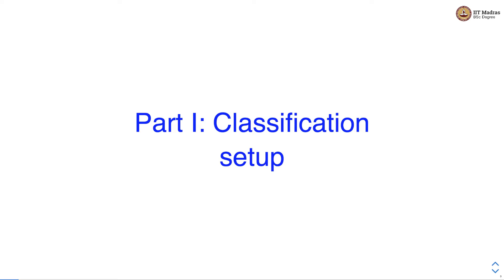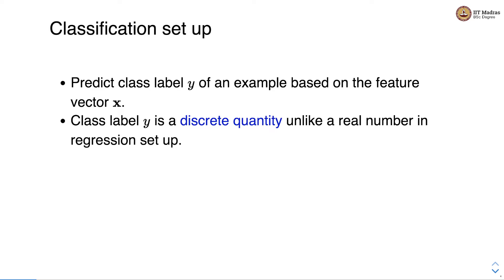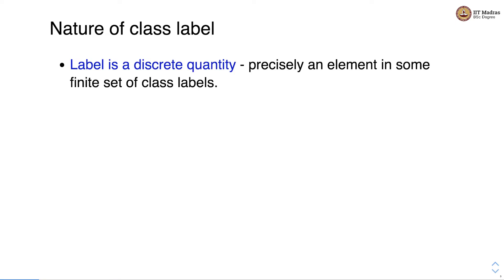Before getting into any of these methods, let's look at a generic classification setup. In classification, we are interested in predicting class label y of an example based on its feature vector. The class label is a discrete quantity, unlike a real number in the regression setup. In case of classification, label y is a discrete quantity — it is precisely an element in some finite set of class labels.